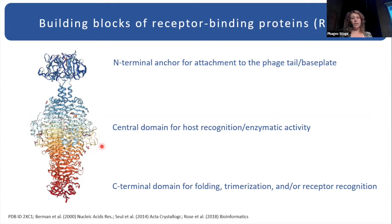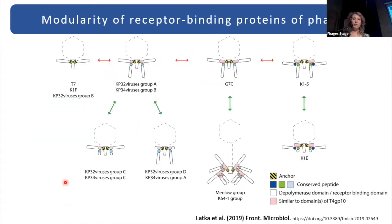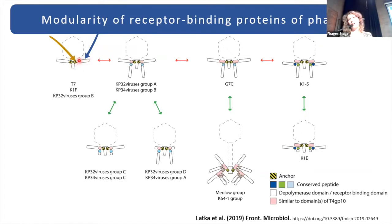The enzymatic building block can be subdivided into two more building blocks: the central enzymatically active part, and the C-terminal domain responsible for folding and receptor recognition. When we look at phage evolution, we can see that when a phage wants to switch its specificity, it will exchange the enzymatic building block while keeping the ANCHOR building block untouched to allow attachment to the phage tail, and then the specificity of the phage will be switched.